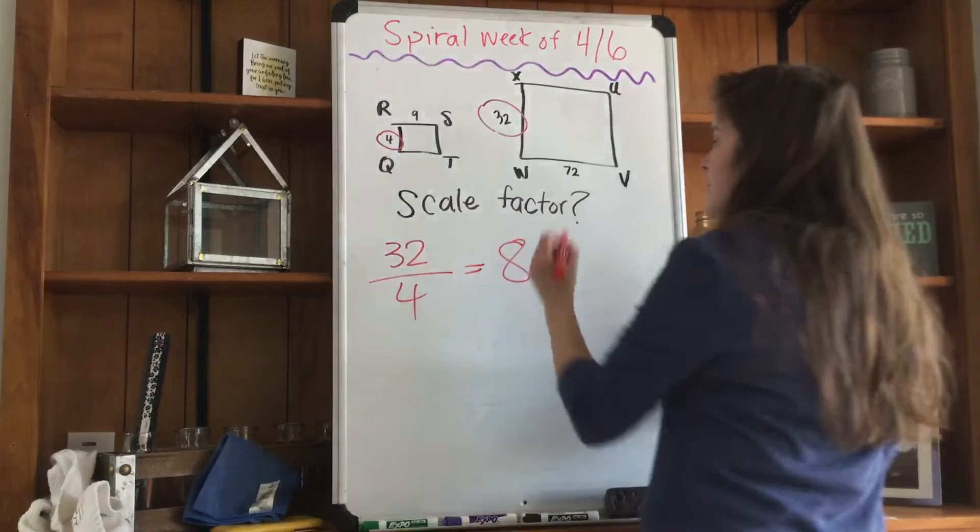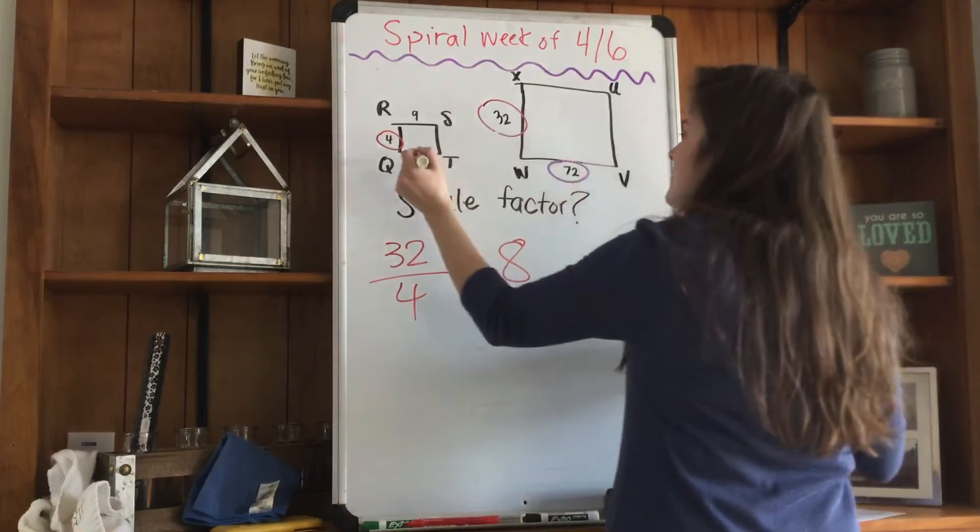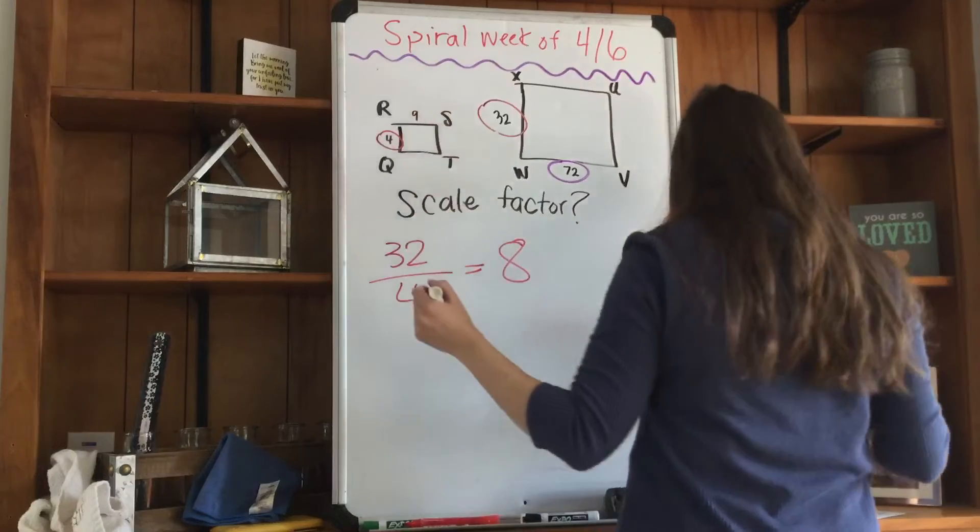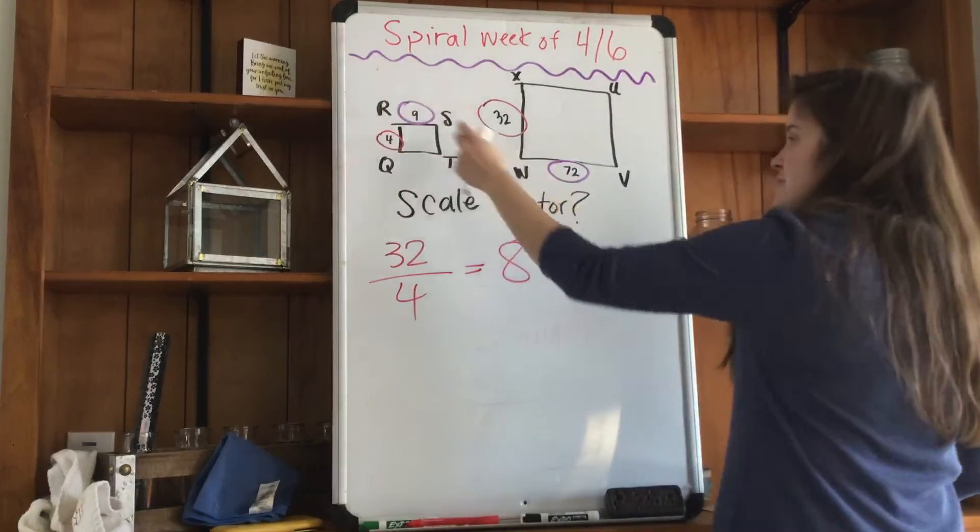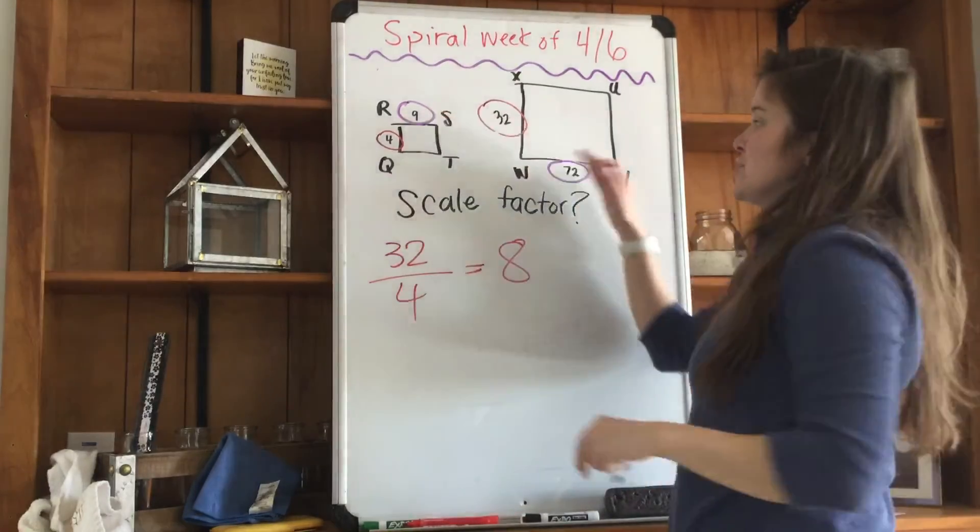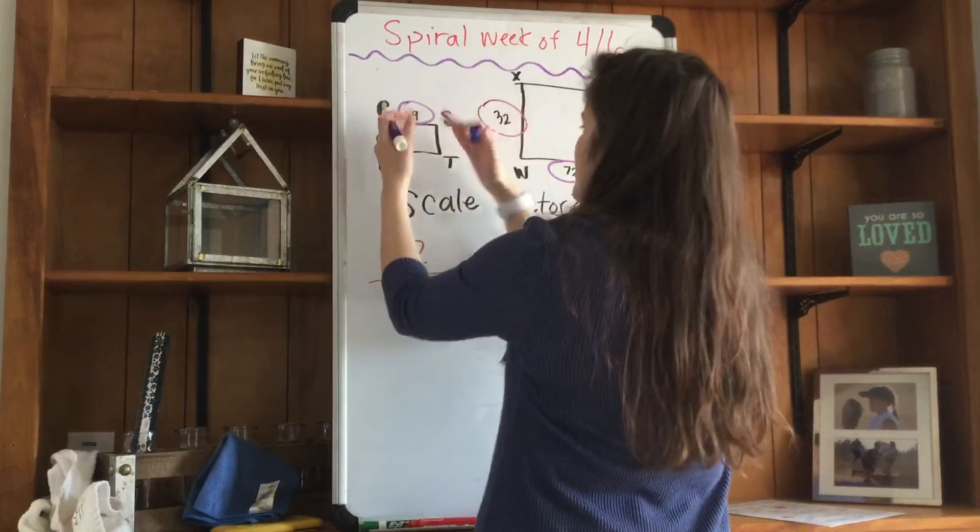but I can double-check that by doing, in another color, 72 and 9. And you know why I can do these in like terms? Because it's a rectangle. We know that these sides, these two are the same, and these two are the same.